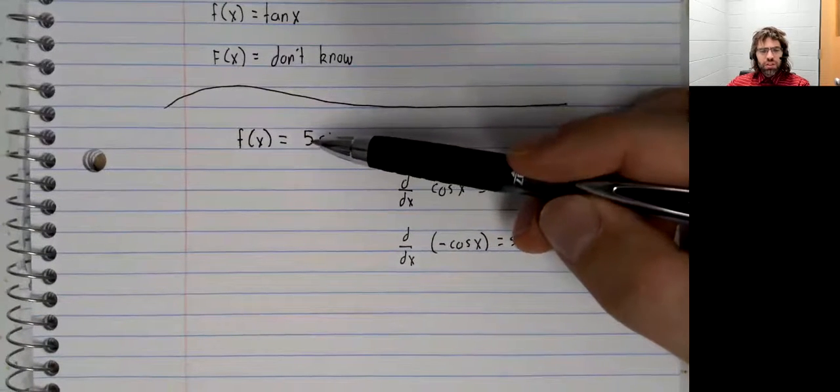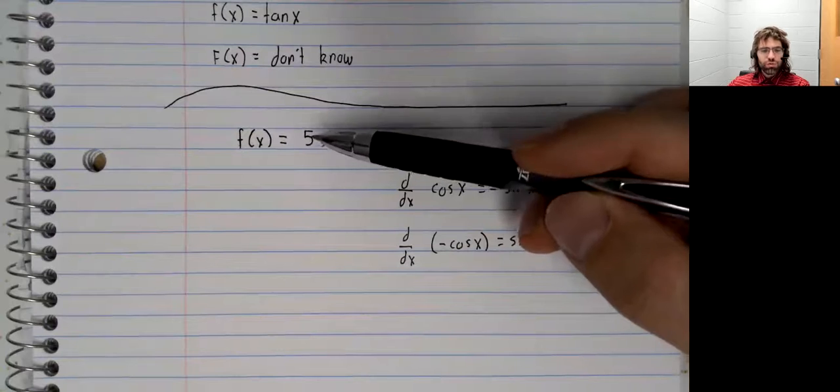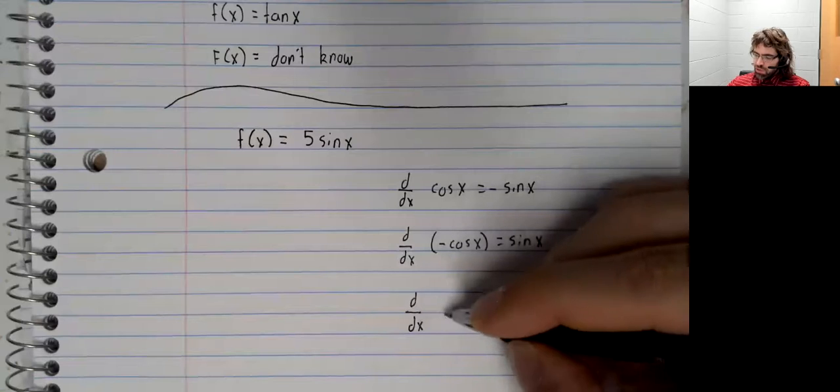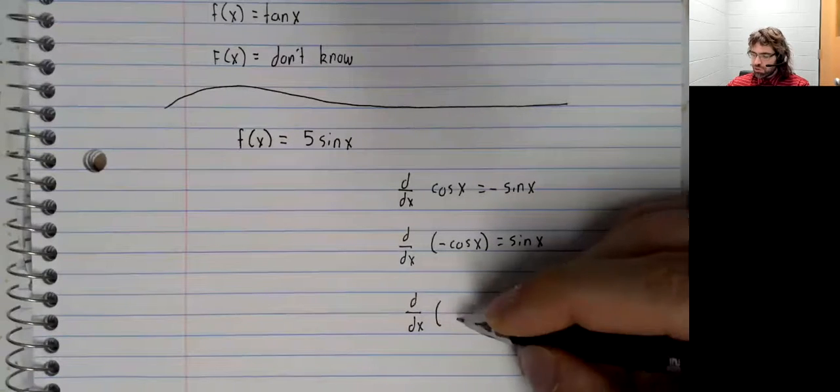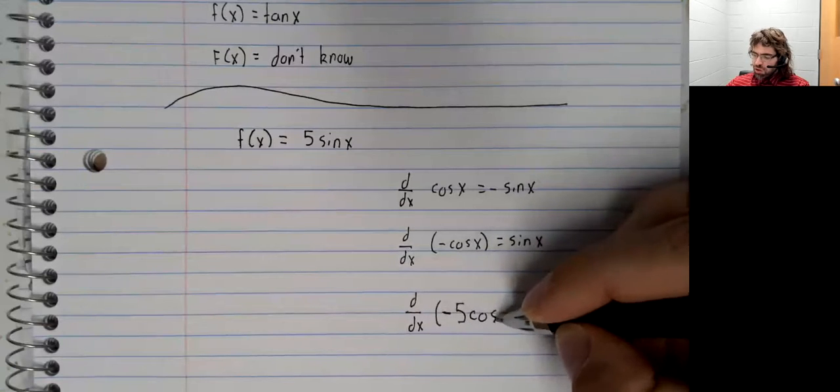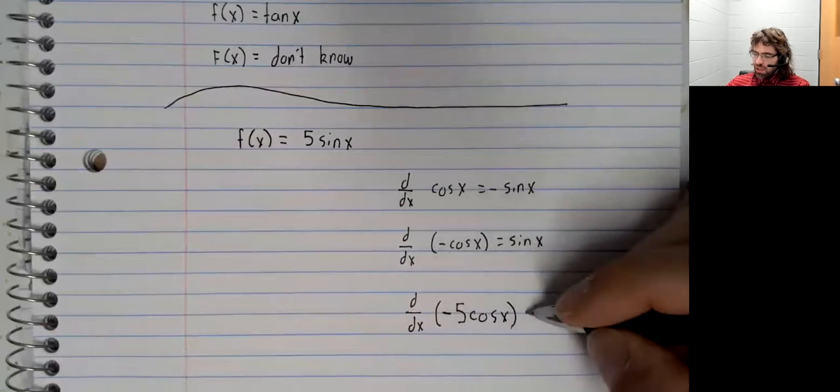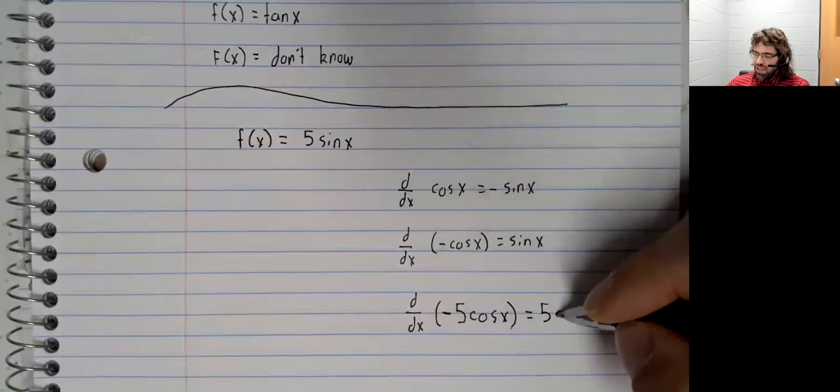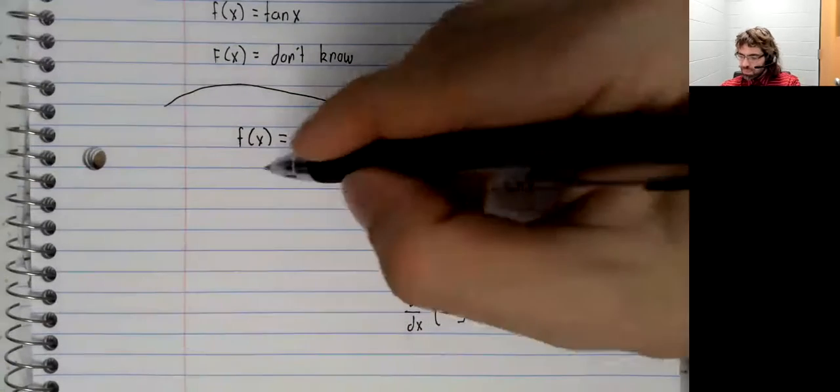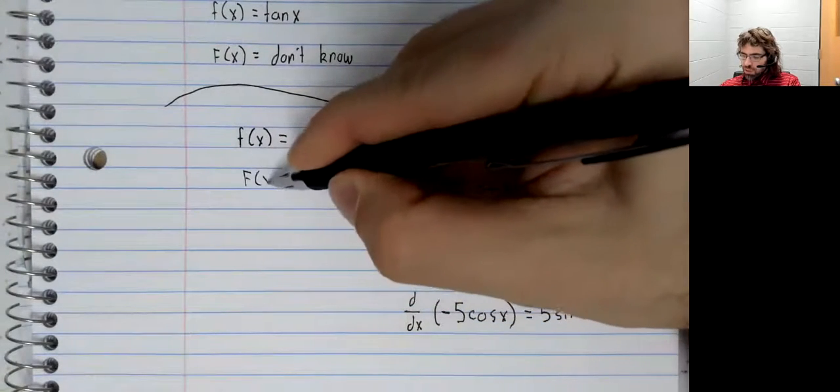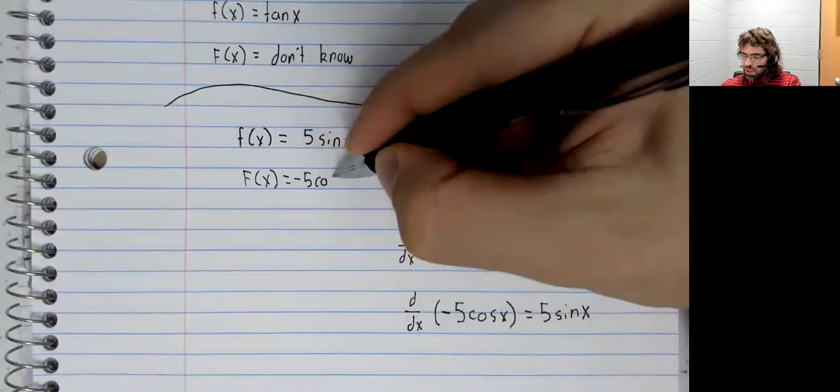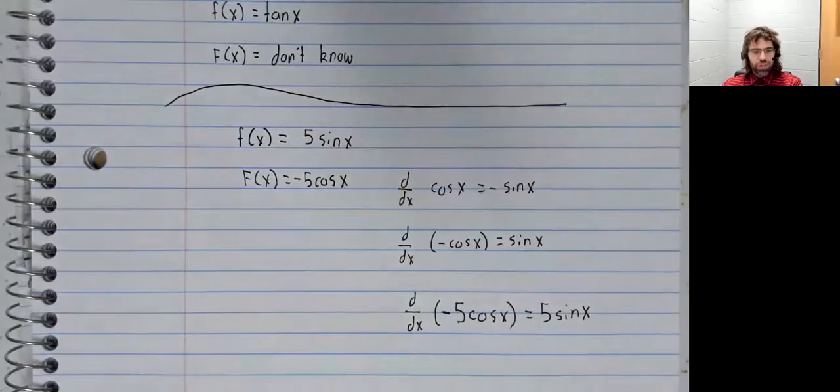Therefore, the derivative of the negative cosine is the positive sine. But what about this five? Well, constants have the special property that when you take a derivative, you just ignore them pretty much. If we put a five in front of the cosine, it would still be there when we take the derivative. And so we have worked out an antiderivative.